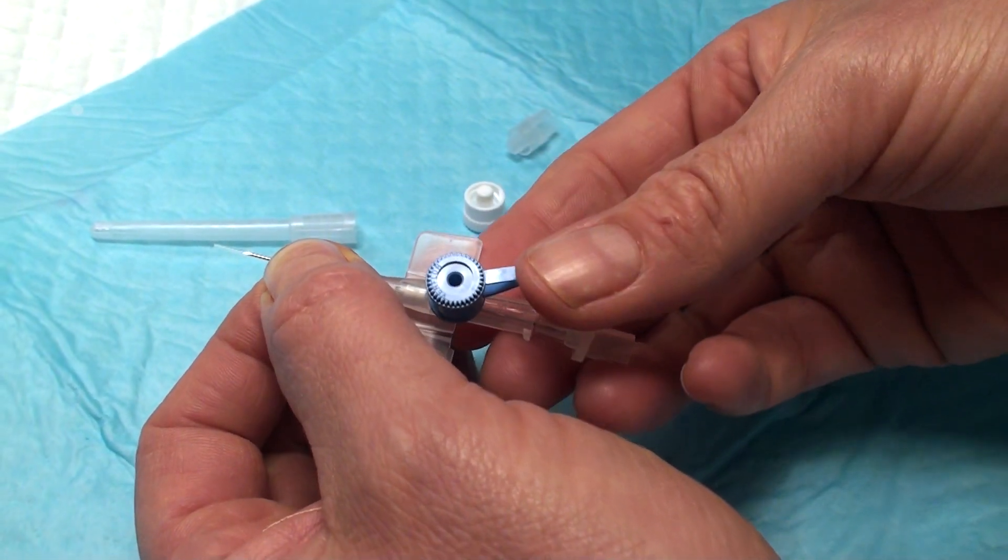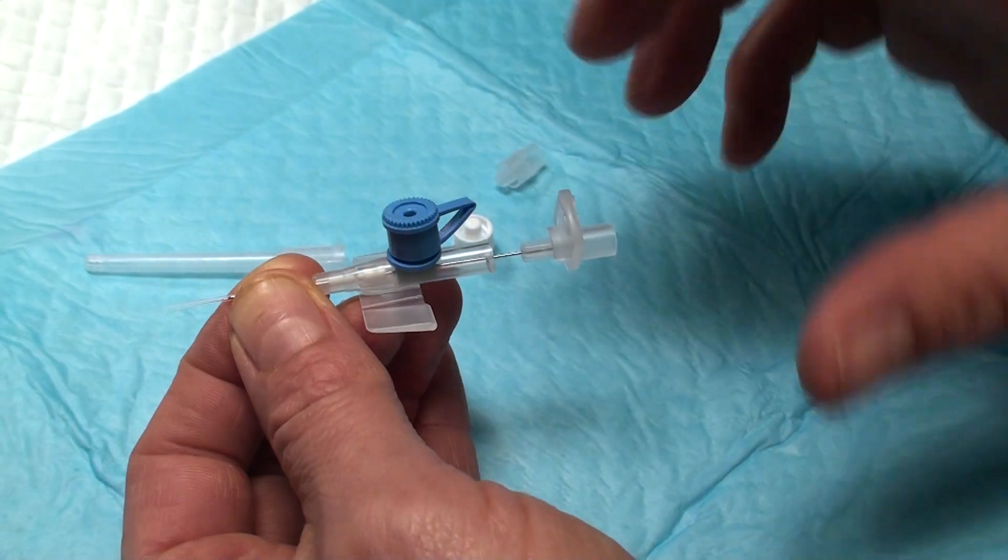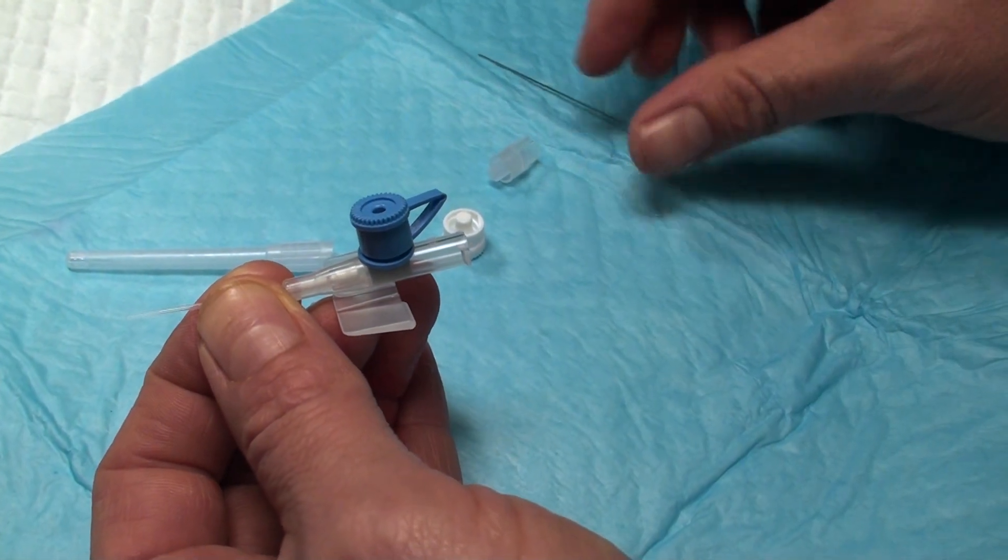Then you just go on like this until you have the entire catheter inside the tail of the animal, and then you remove the needle.